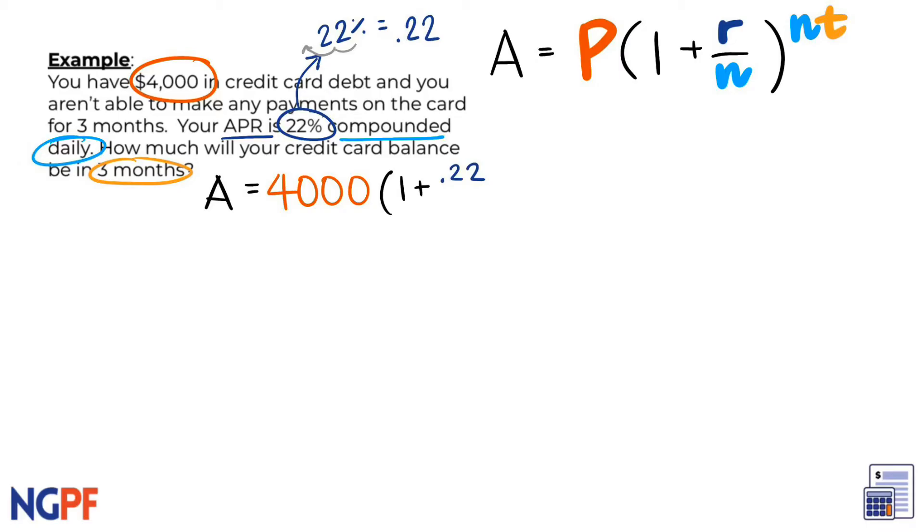Next, we have N, which represents how often we are compounding per year. Since the account compounds daily, we know that it will then compound 365 times per year.